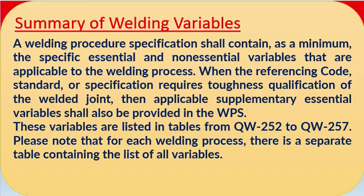In welding processes, if there is any toughness or impact requirement, then supplementary essential variables also need to be added in the WPS. When the referring code, standard, or specification requires toughness qualification of a particular welding joint, then applicable supplementary essential variables shall also be provided in the WPS. Essential variables, non-essential variables, and supplementary essential variables are all included in one table.